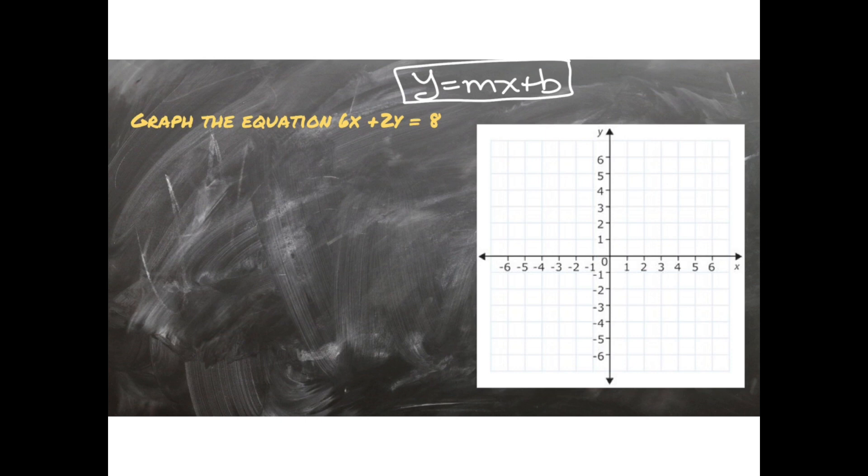How is that going to look like? Well we're going to write our equation 6x plus 2y equals 8, and we are going to solve for y. We're going to leave the letter y alone on one side.